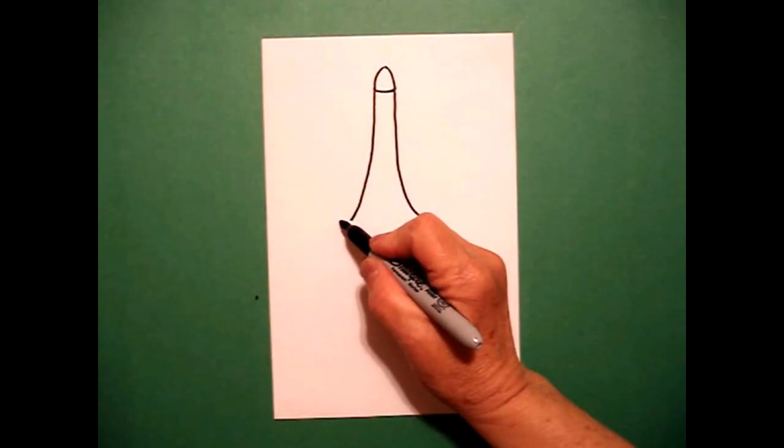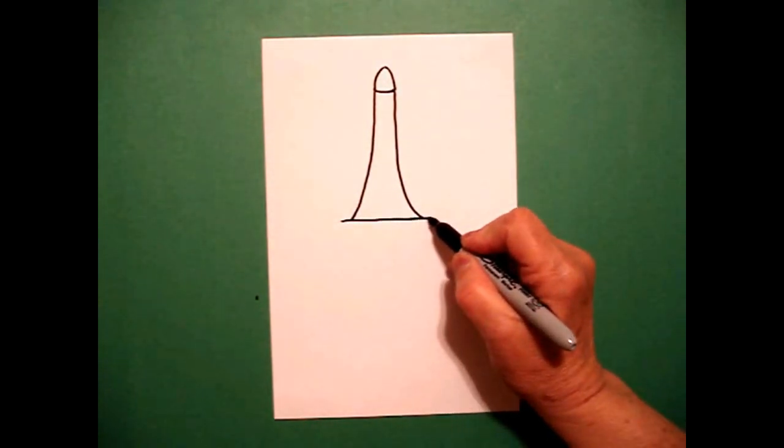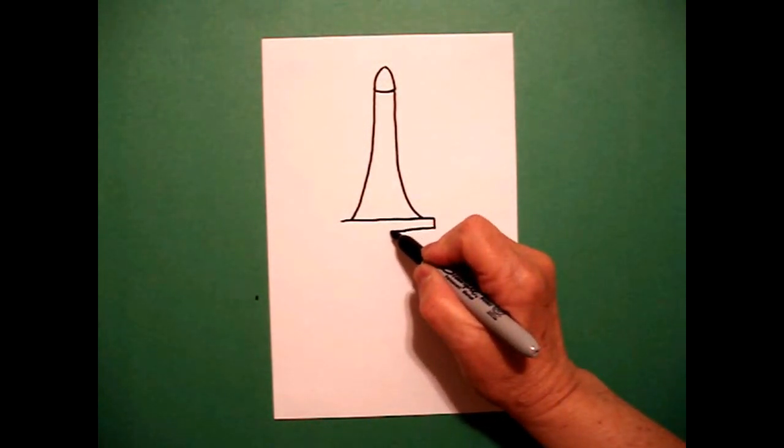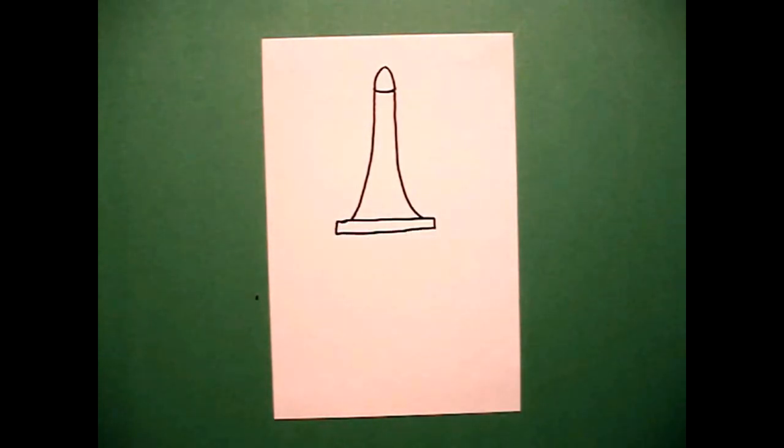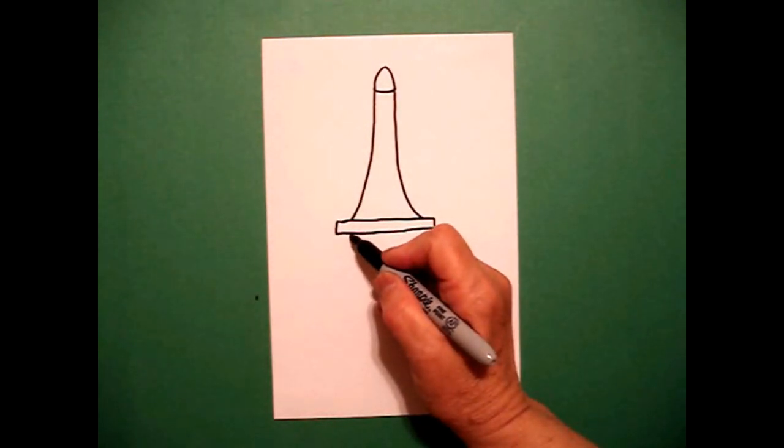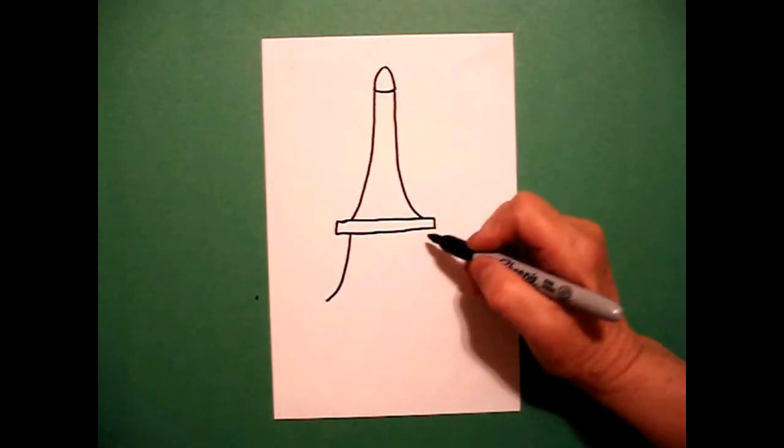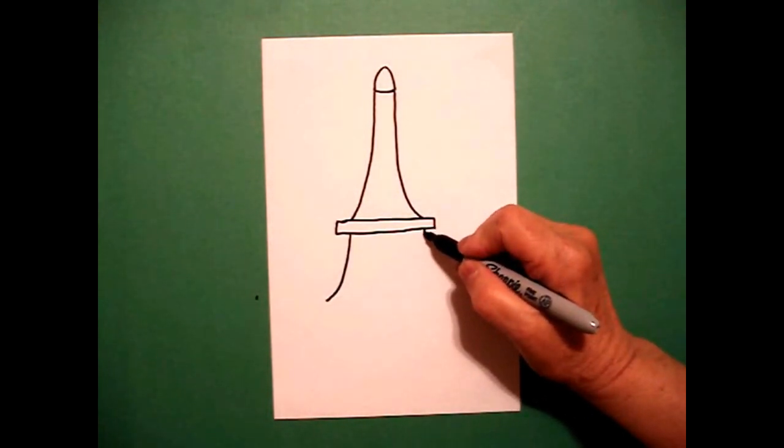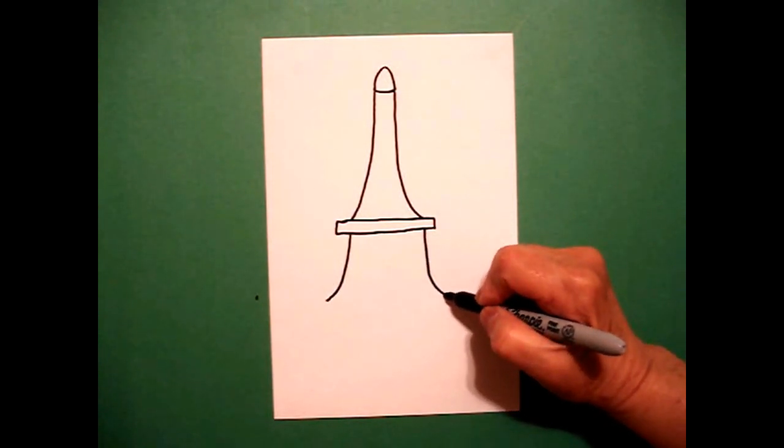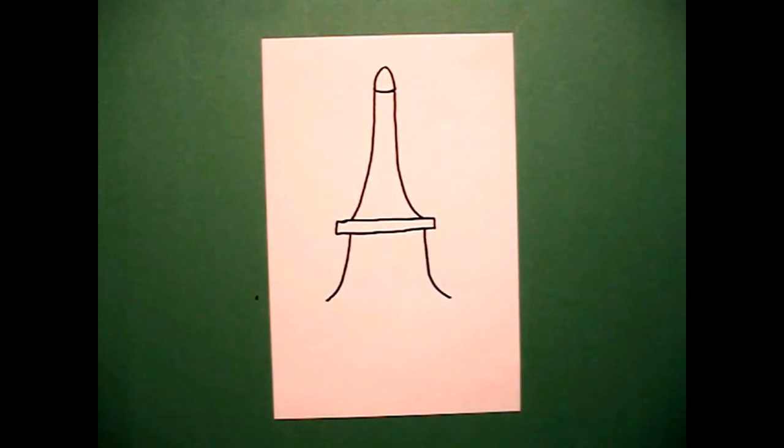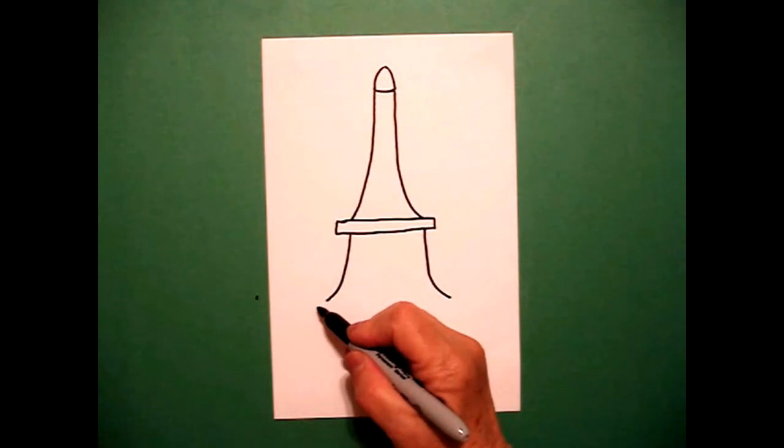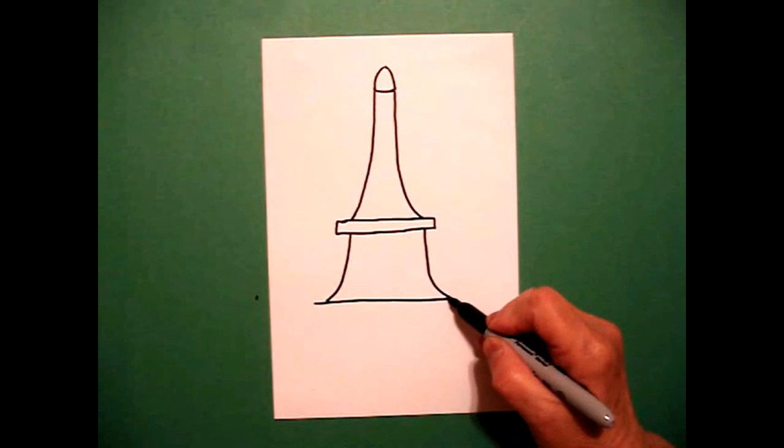At the bottom, I am going to draw a skinny rectangle. I come back to the left and I draw another slightly curved line down on the left. Come on the right, slightly curved line down on the right.